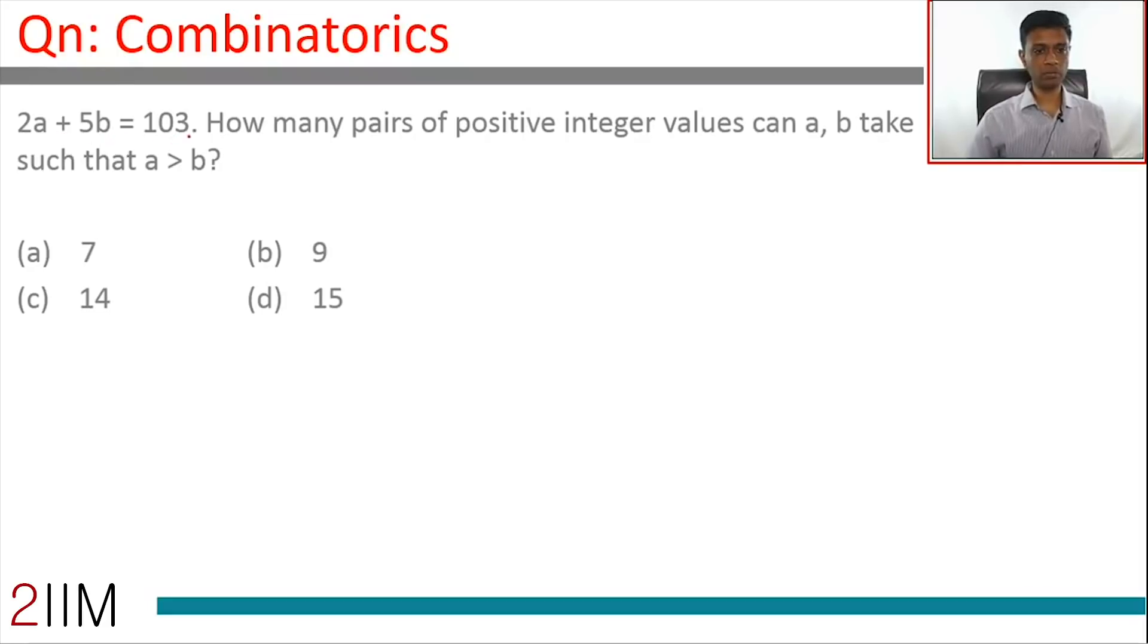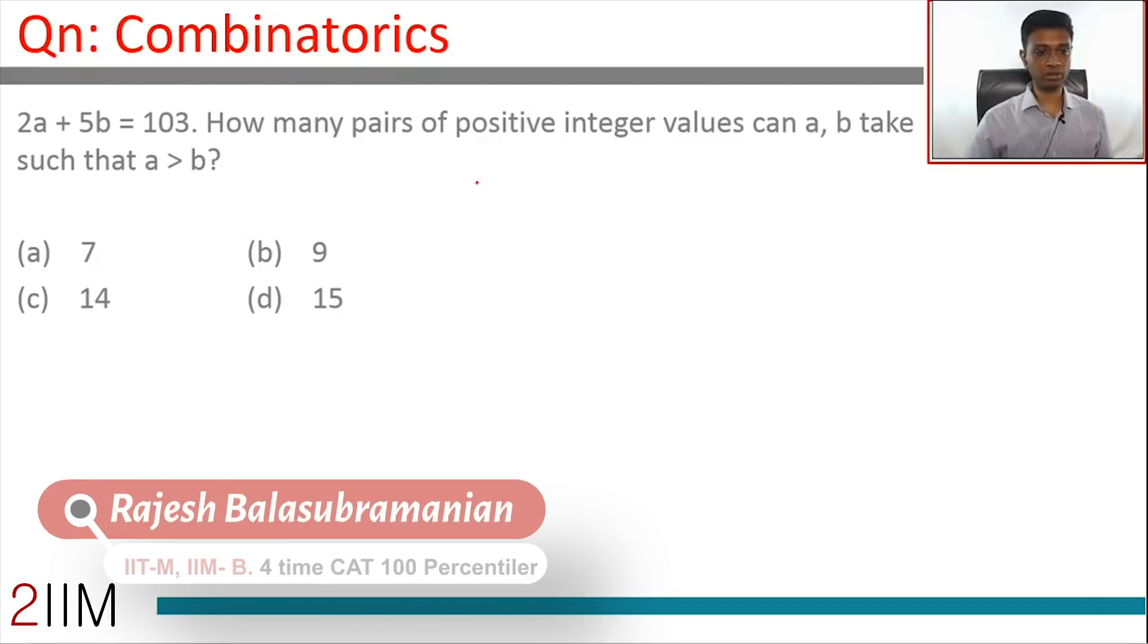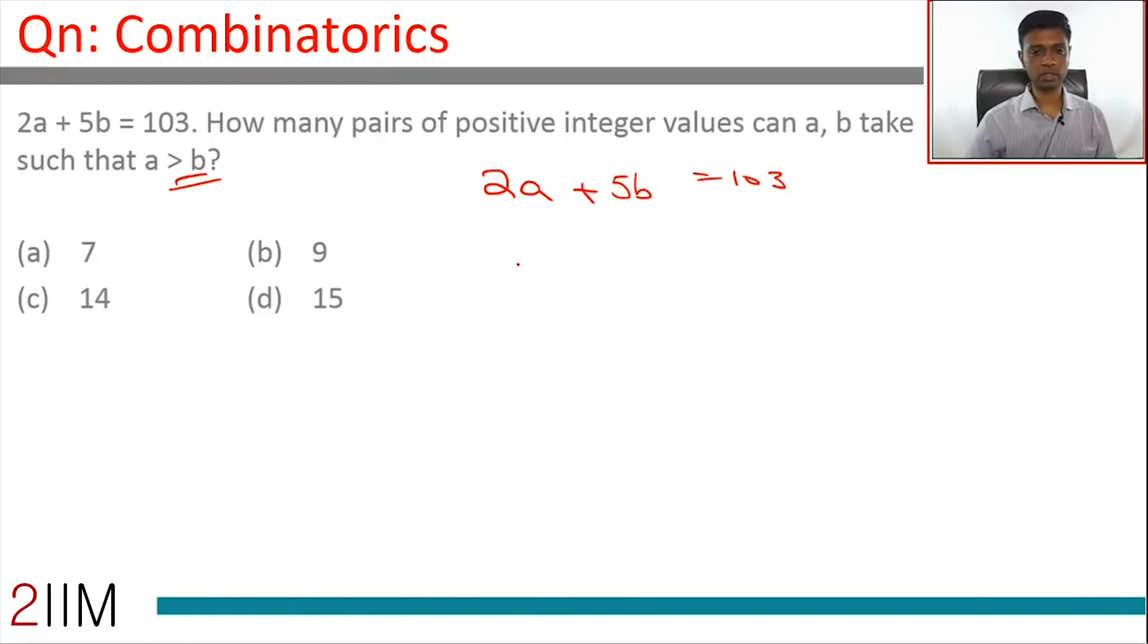2a plus 5b is 103. How many pairs of positive integer values can a, b take such that a is greater than b? Let's forget this a greater than b constraint for now. We'll come to that later. Let's think about 2a plus 5b equal to 103.